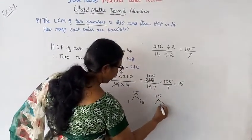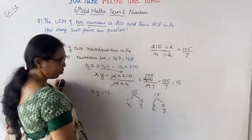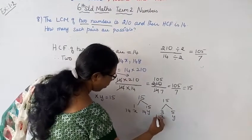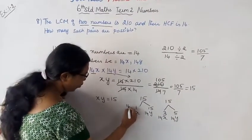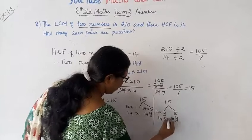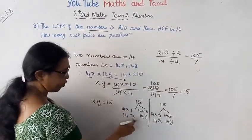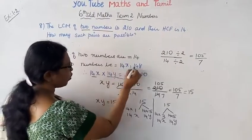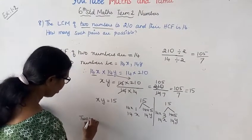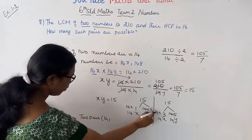So the factor pairs of 15 and 35 are: x and y can be 1 and 15, or 3 and 5. Therefore the number pairs are: 14 times 1 equals 14, 14 times 15 equals 210, and 14 times 3 equals 42, 14 times 5 equals 70.